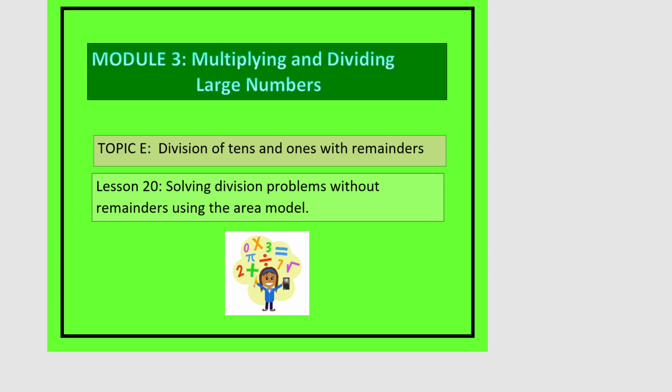This is lesson 20 in module 3, and we're going to be solving division problems without remainders using the area model. We're going to start with a rectangle with an area of 48, and we know one side is 4 units long. We want to know what the other side is, so we're going to use what we know about the area model — we've seen it before with multiplication — to try to figure out the other side.